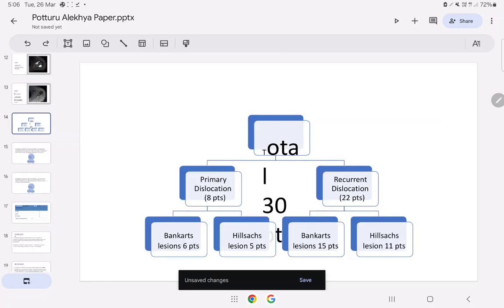Total 30 patients: Primary dislocation in 8 patients, recurrent dislocation 22 patients. In primary dislocation, Bankart is seen in 6 patients, Hill-Sachs in 5 patients. In recurrent dislocation, Bankart is seen in 15 patients.